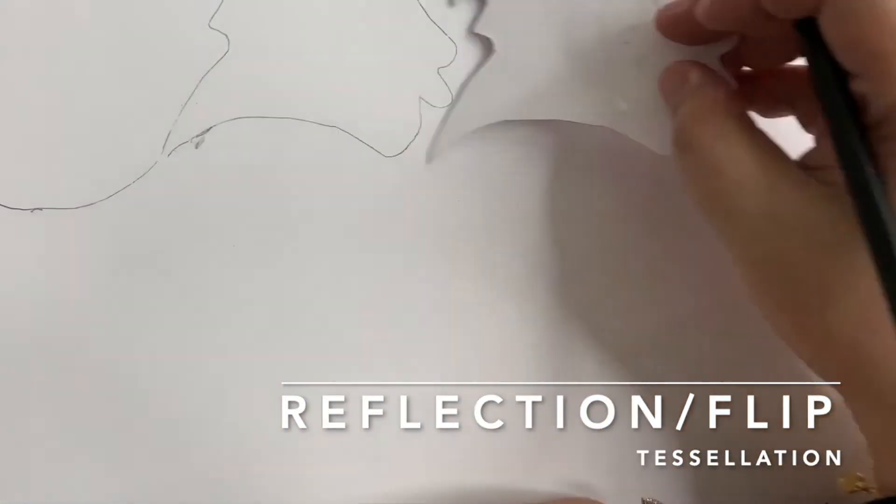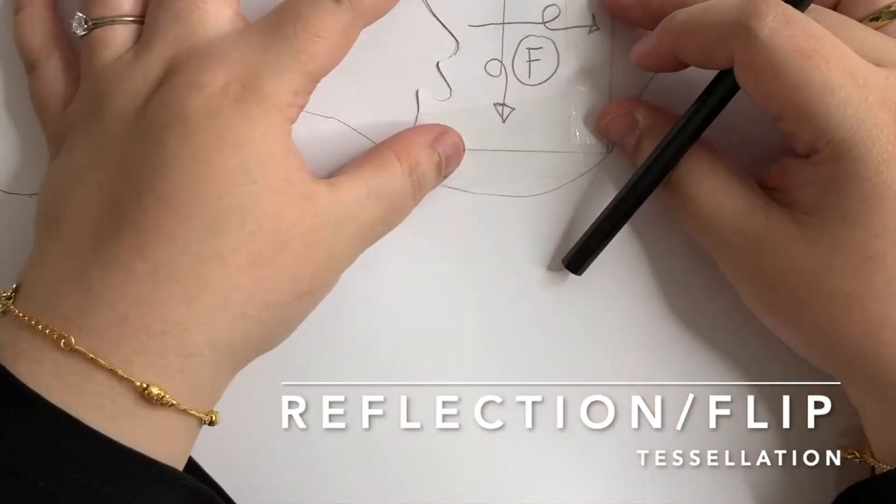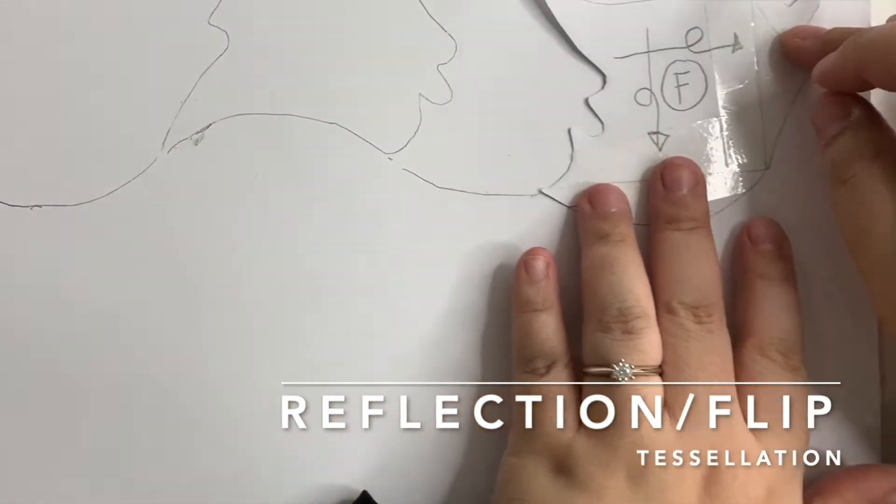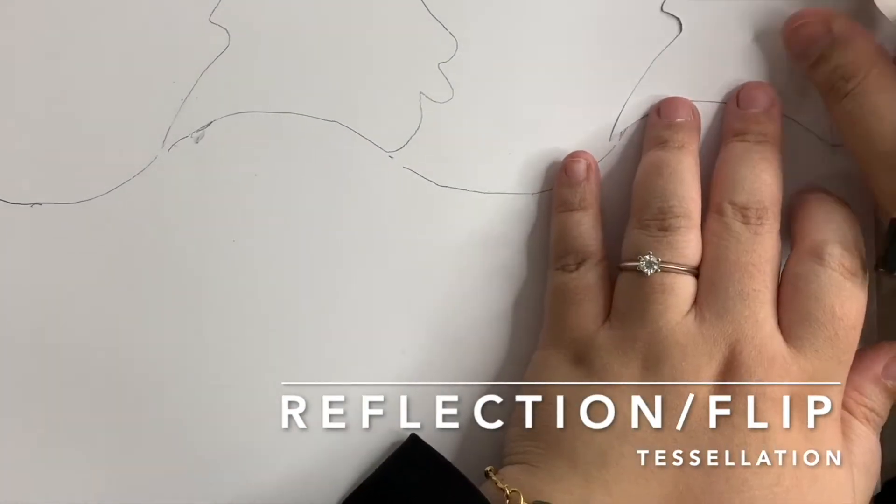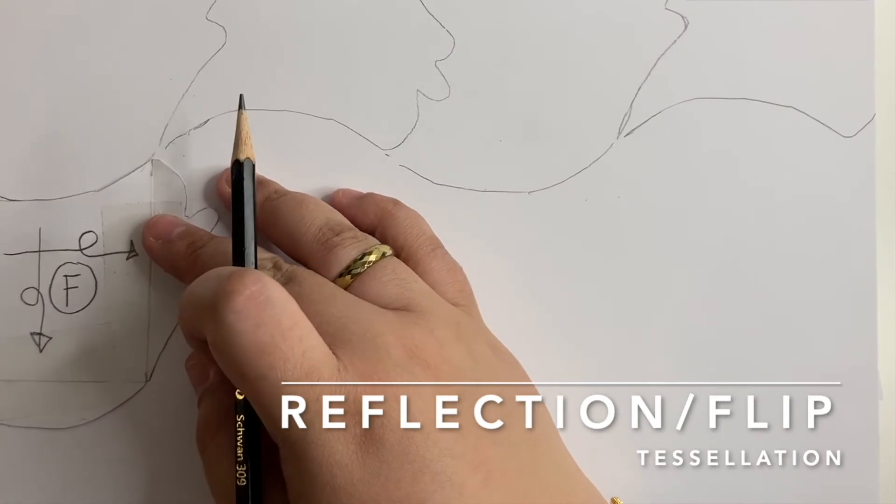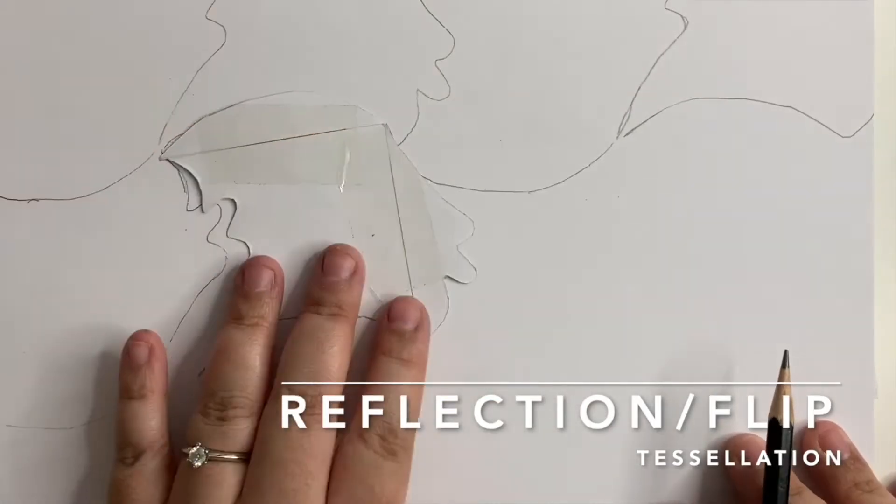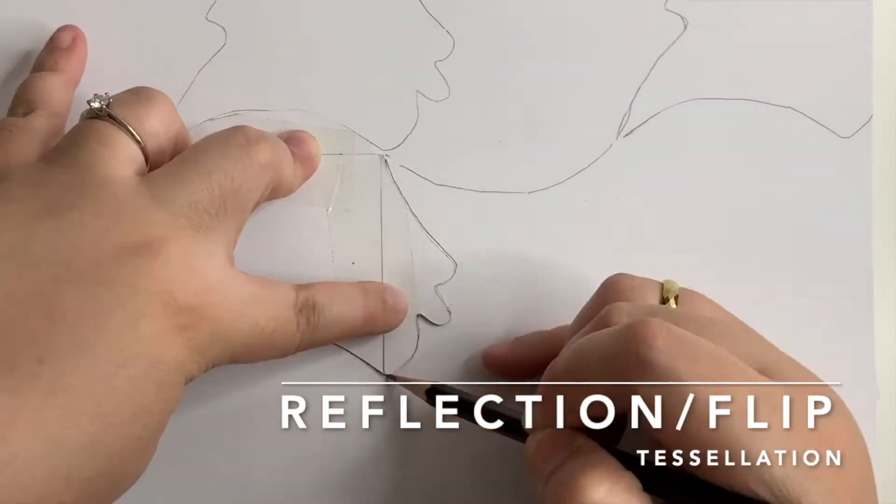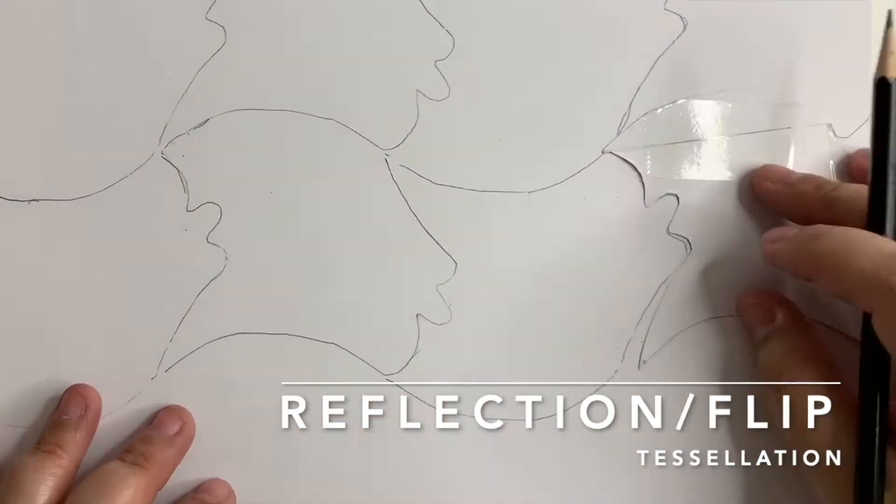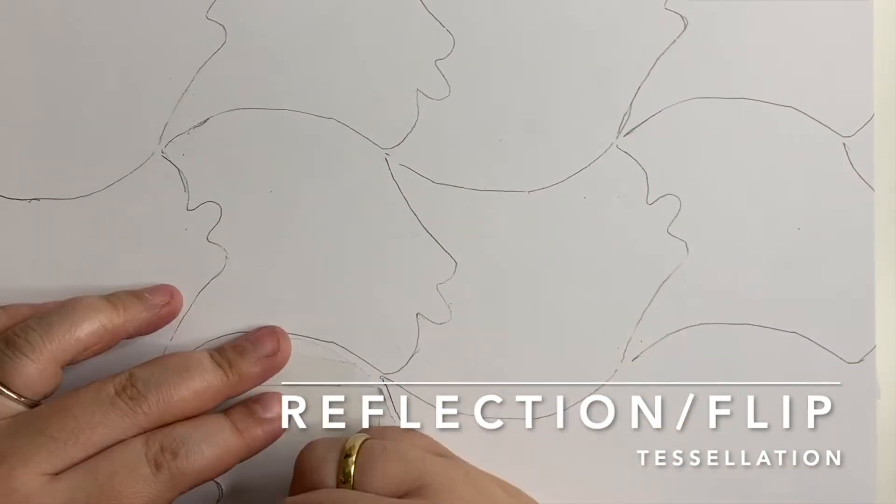Once you are done, slide, flip, fit and trace. Repeat these steps until your whole paper is filled up without any gaps or spaces in between the shapes.